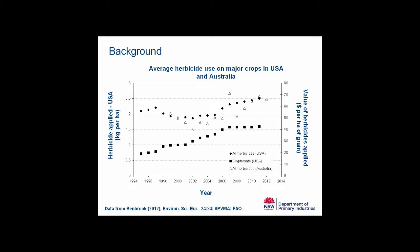Herbicide data is notoriously difficult to come across. This graph shows some data from the US recently compiled by Ben Brook. The diamonds show the amount of herbicides applied in kilograms per hectare to the three major US crops — cotton, corn and soybean — and you can generally see an increasing trend, with more herbicide applied per hectare. This is consistent with the uptake of minimum till and no-till practices, whereby more reliance is placed on herbicides for effective weed control.